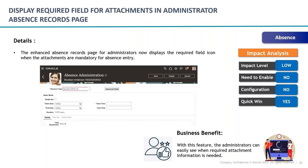Another absence update relates to attachment visibility and the star icon. Earlier, even when an absence type was configured to require an attachment, there was no star icon displayed. Users who forgot to add the attachment would only get a warning after the fact. Now, a star icon appears next to the attachment field, following Oracle's standard indication that the field is mandatory. This will reduce the chances of users missing the attachment, and it will appear automatically based on your configuration.